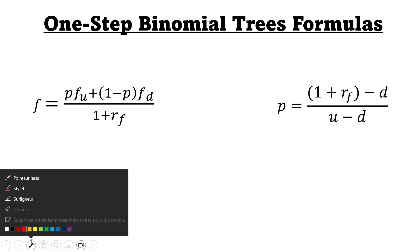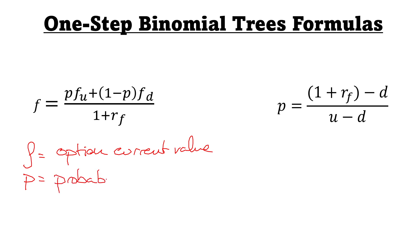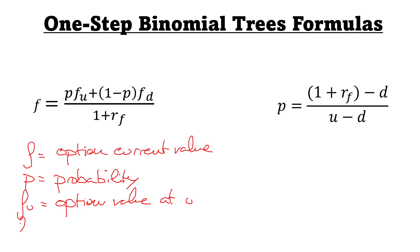Let's talk about the one-step binomial tree. Here we have the formulas — let's explain what each variable means. f is the current value at time zero of the option. p is the probability, which I'll explain in more detail on the next slide. fu is the option value at u, fd is the same but at d, and rf is the risk-free rate.